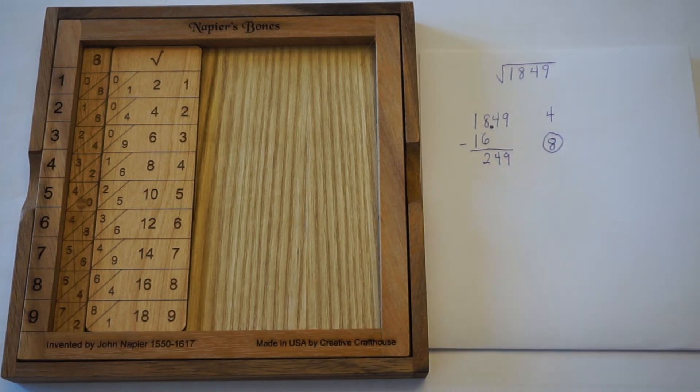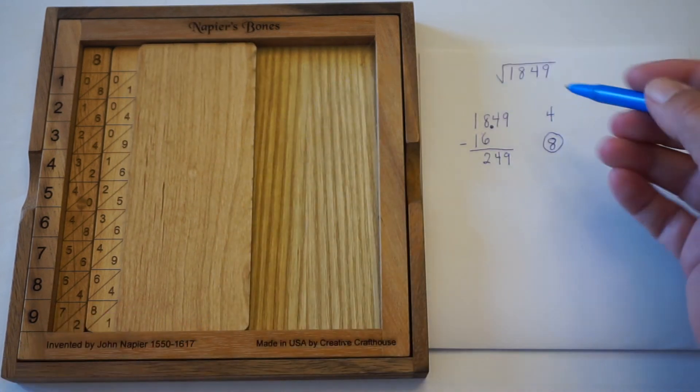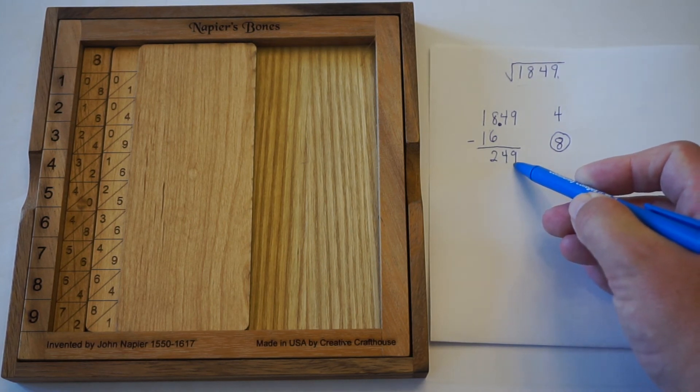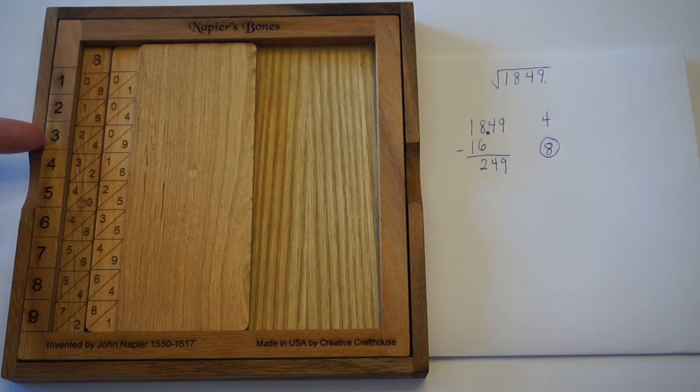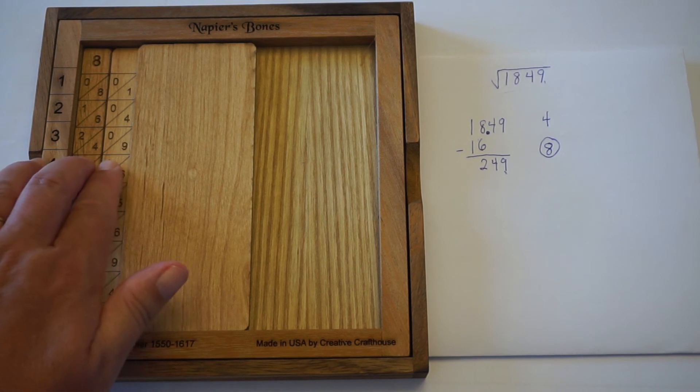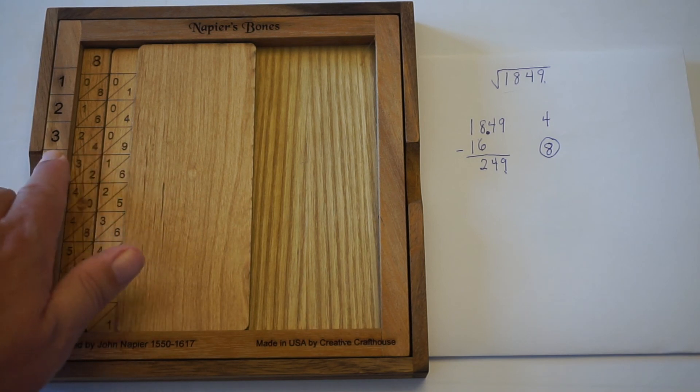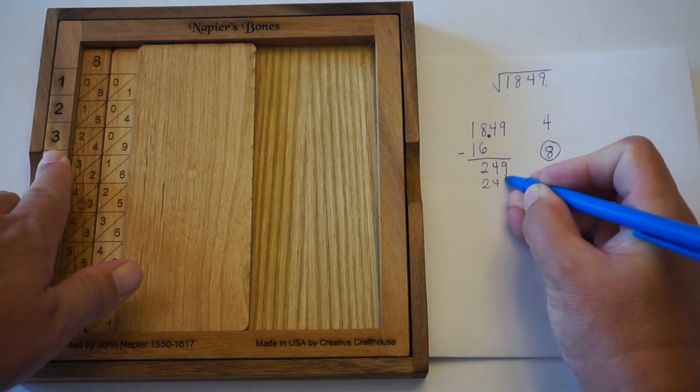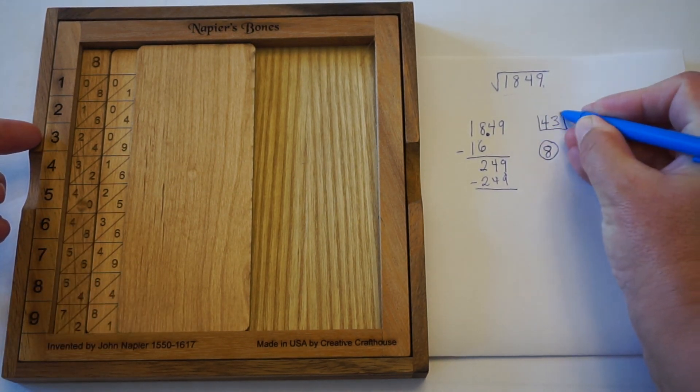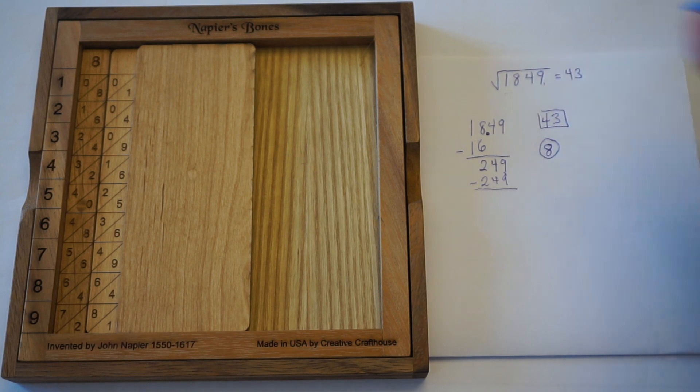So at this point, we're looking for the smallest number that goes into 249 without going over. Now if this number, to begin with, is a perfect square, I'm going to find 249 that's going to go in exactly. And as I go down, I actually see that right here, 249. We're always adding down the diagonals. So I've got a zero plus four in the middle. So this is 249 sitting right next to the 3. And so that 3 is the second part of our answer. Therefore, the square root of 1,849 is equal to 43.